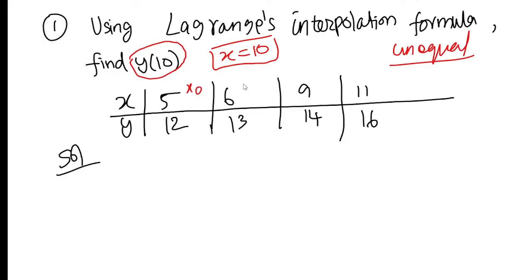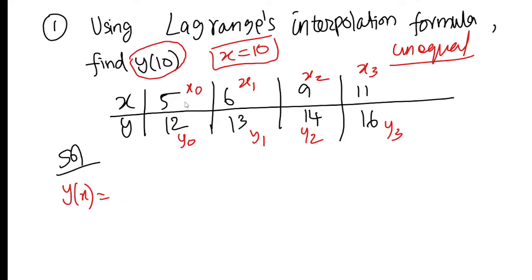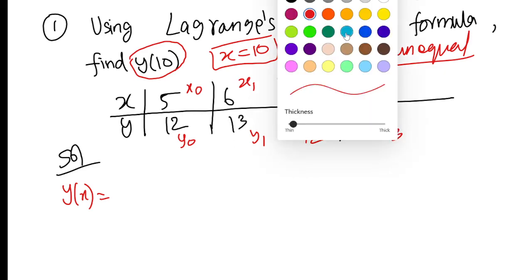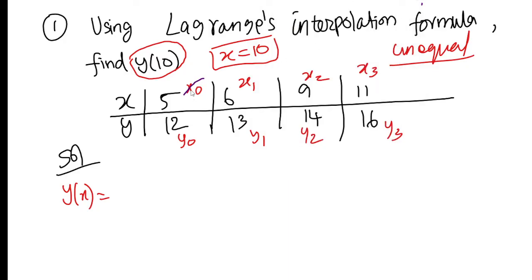In the table, we have x0, x1, x2, x3 and corresponding y values y0, y1, y2, y3. We set up y(x) using these values. The x we want to find is given, and we substitute into the Lagrange formula using these x and y entries.